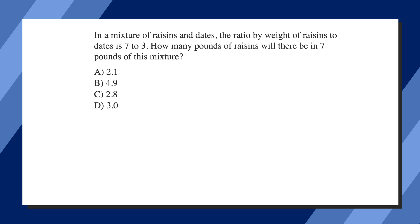In a mixture of raisins and dates, the ratio by weight of raisins to dates is 7 to 3. How many pounds of raisins will there be in seven pounds of this mixture? The answer choices are all numbers in decimal form. Okay, ready, set, pause.